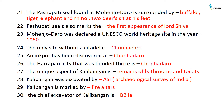Mohenjo-daro was declared a UNESCO World Heritage Site in the year 1980. The only site without a citadel is Chanhudaro. An inkpot has also been discovered at Chanhudaro. The Harappan city that was flooded thrice is also Chanhudaro.